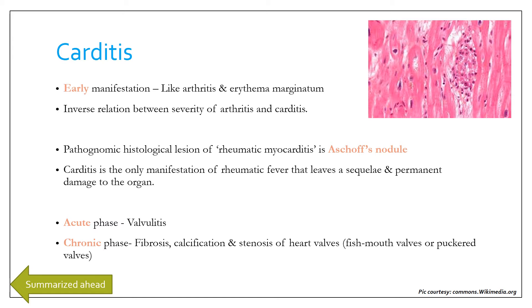In the acute phase, endocarditis presents as valvulitis and the most common lesion is mitral regurgitation. In the chronic phase, in established rheumatic heart disease, there is fibrosis, calcification, and stenosis of the heart valves. The heart valves are typically referred to as fish-mouth valves or puckered valves.